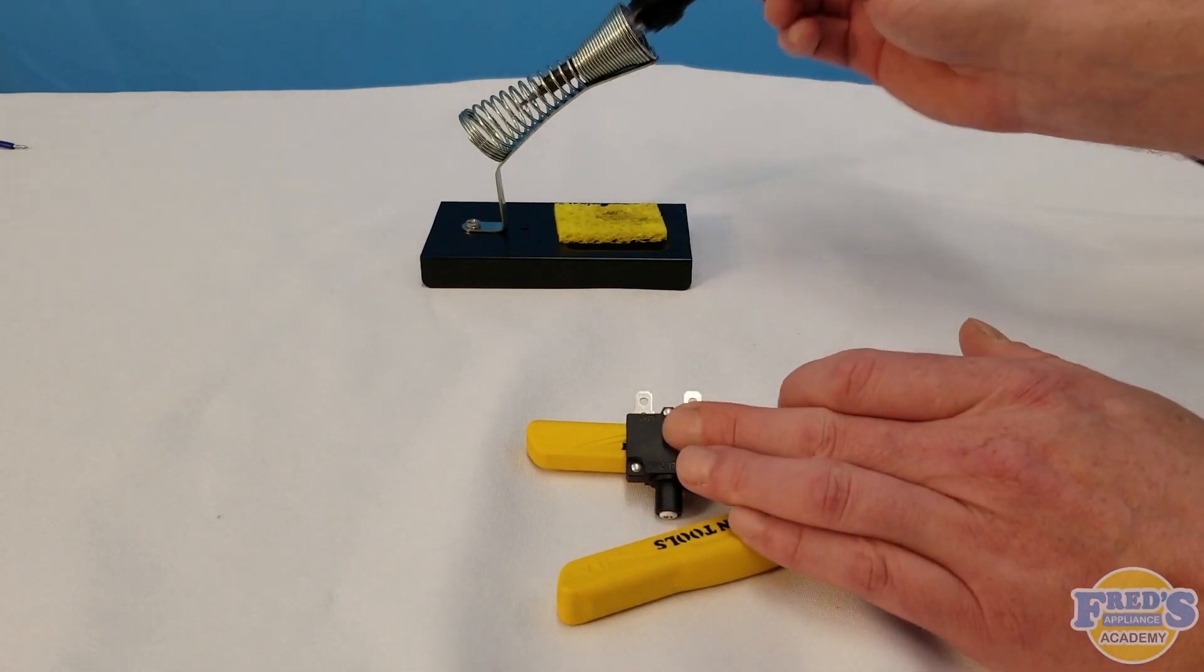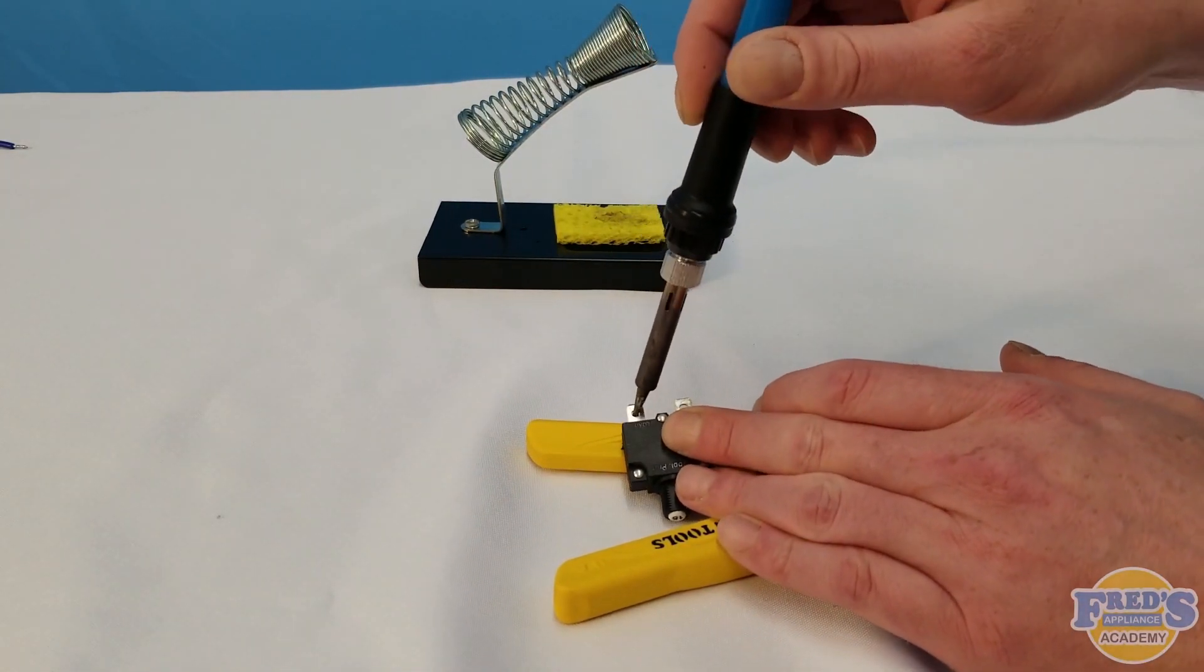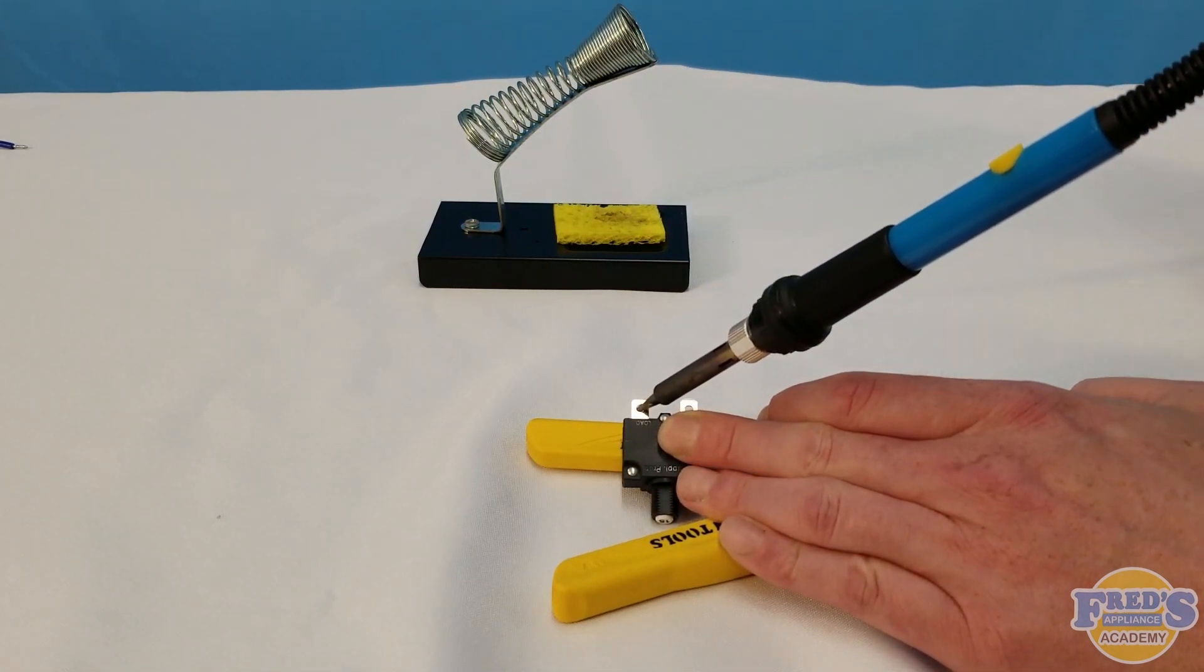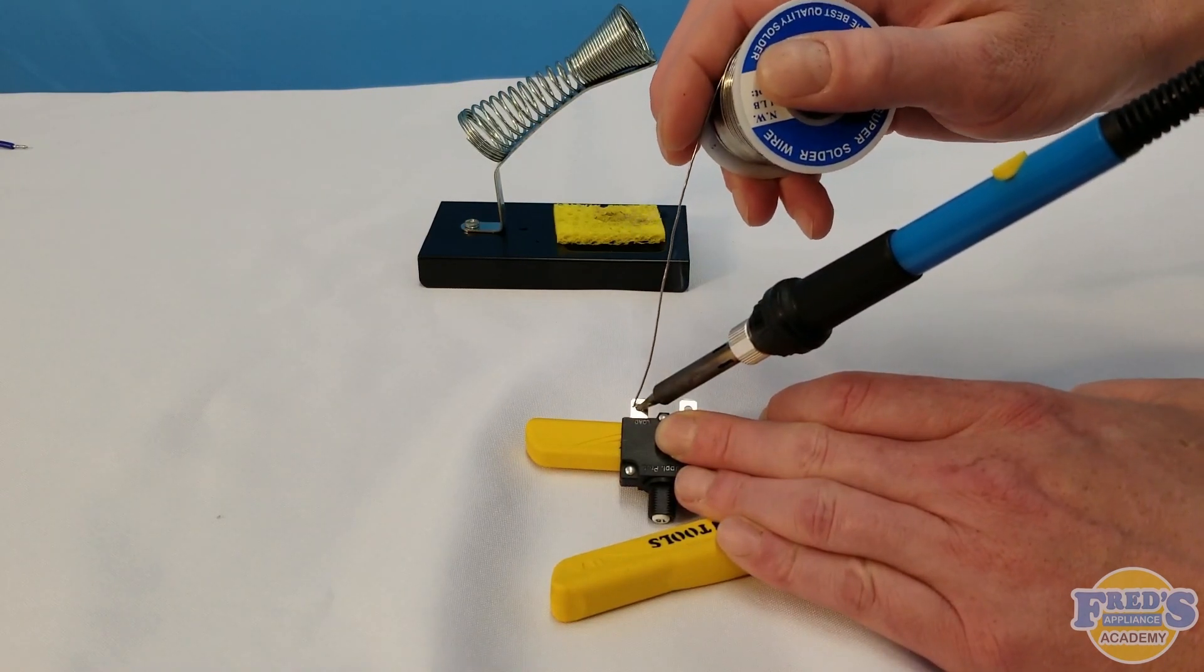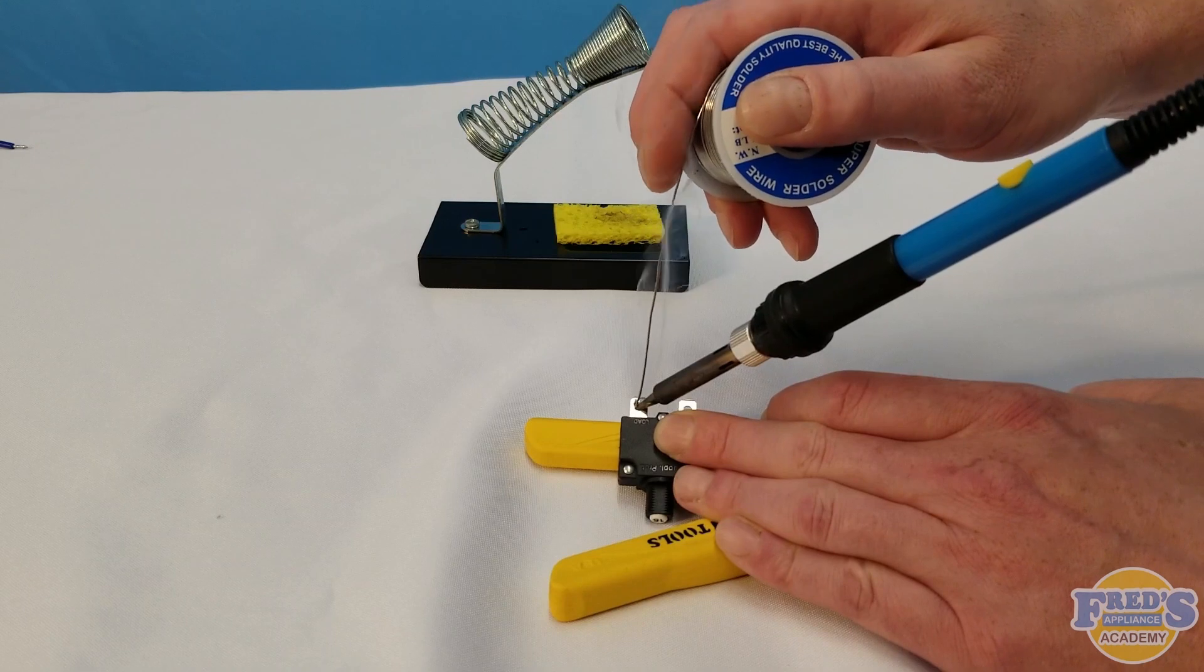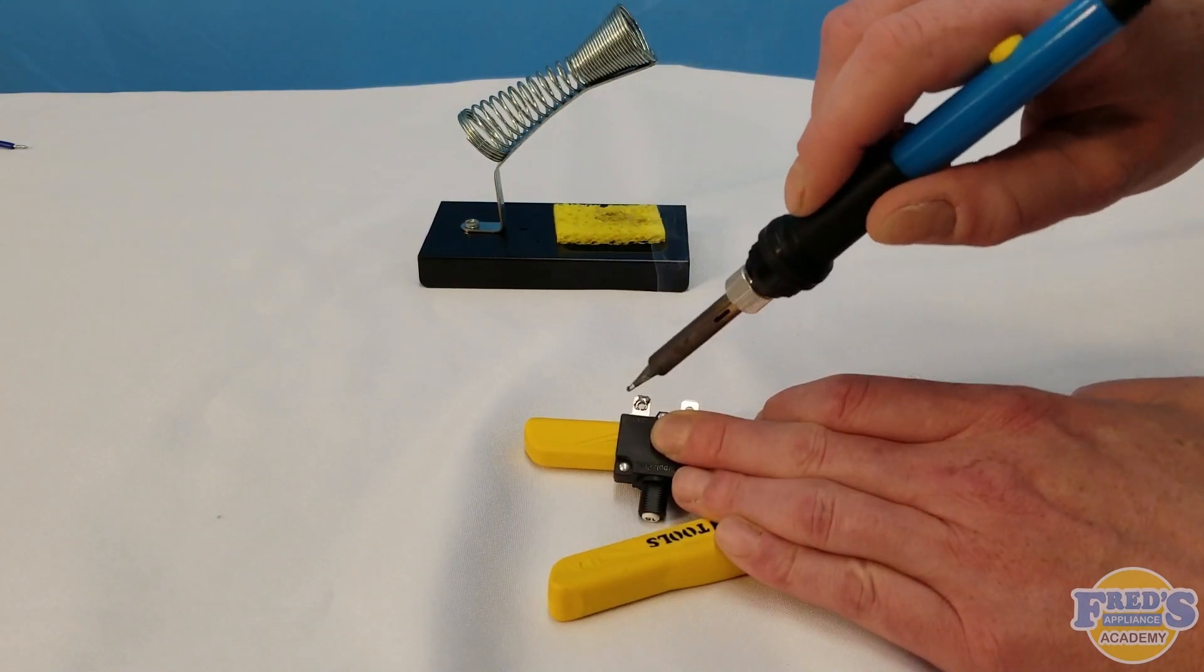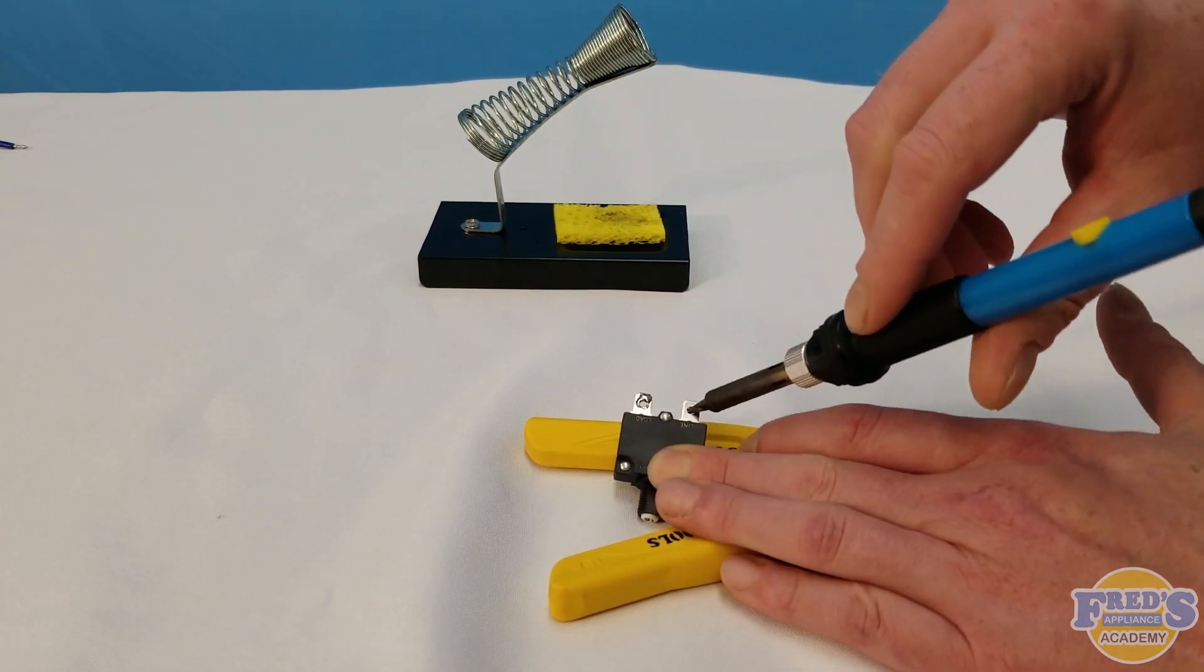Once we're done pre-tinning the wiring, we're going to pre-tin the terminals on the 15 amp breaker. I'm using the wire strippers again to help me stabilize the 15 amp breaker and directly placing my soldering gun into the eyelet on the terminal. This causes it to heat relatively quickly and I can rapidly get the solder onto both terminals. Again, only a small amount of solder is needed on each terminal.